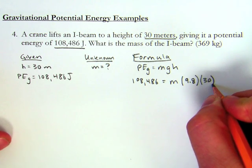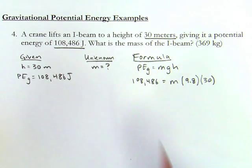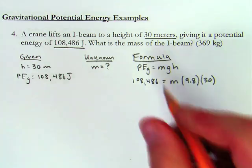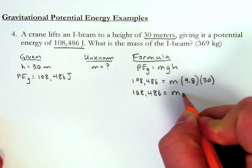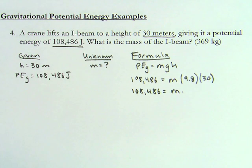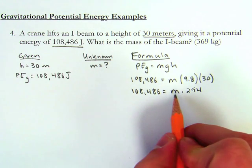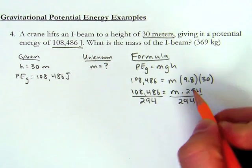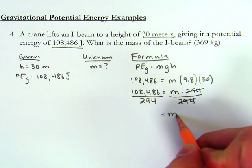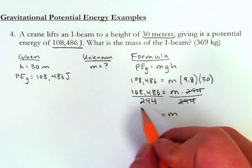As I bring these two things together, 108,486 equals the mass times 9.8 times 30, which is 294. Now all I have to do is divide by 294 on both sides. Once I do that, I'm left with just mass by itself on the right. The mass is 108,486 divided by 294, which gives me 369 kilograms.